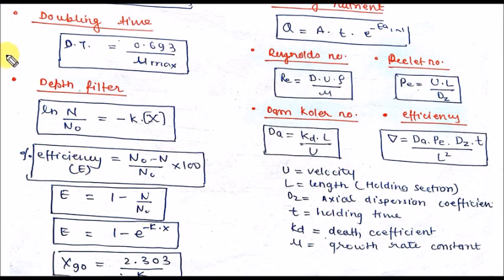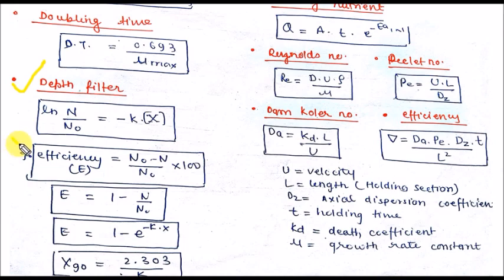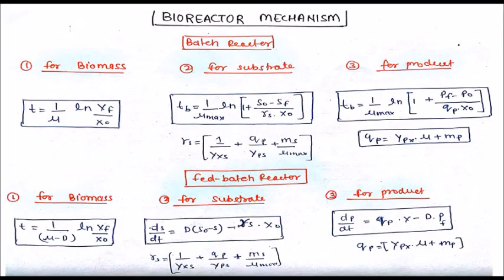There are some formulas for doubling time and for depth filter filtration. When studying filtration mechanisms you can calculate the kinetics of the filter mechanism. The efficiency of filtration is defined by this formula, where N₀ is the initial number of cells and N is the number of cells after a certain time T.